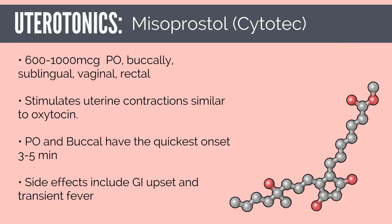Misoprostol, or Cytotec, is a synthetic analog of prostaglandin E1. It is a low-cost, easily stored medication that can be administered via many routes. Although not part of the initial treatment algorithm, misoprostol has a role in management especially if other agents are not available or contraindicated. It is given in doses of 600 to 1000 micrograms via oral, buccal, sublingual, vaginal, or rectal routes. It stimulates uterine contractions similarly to oxytocin, with the oral and buccal routes having the fastest onset of 3 to 5 minutes. Most side effects are minimal, such as GI upset or transient fever.